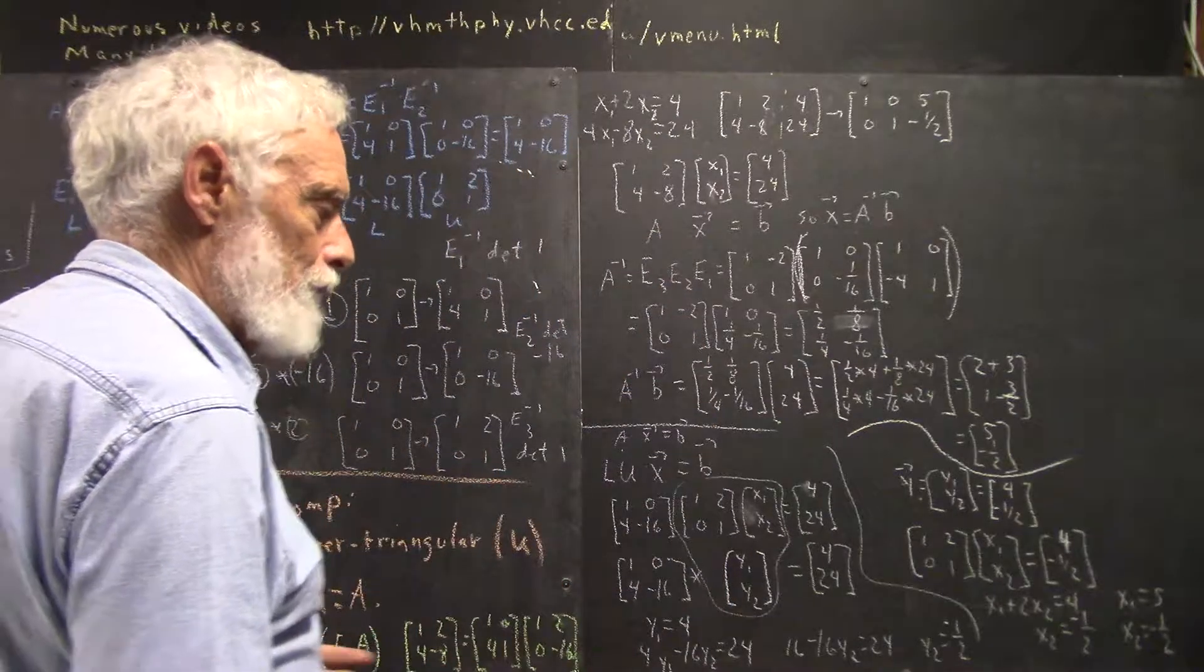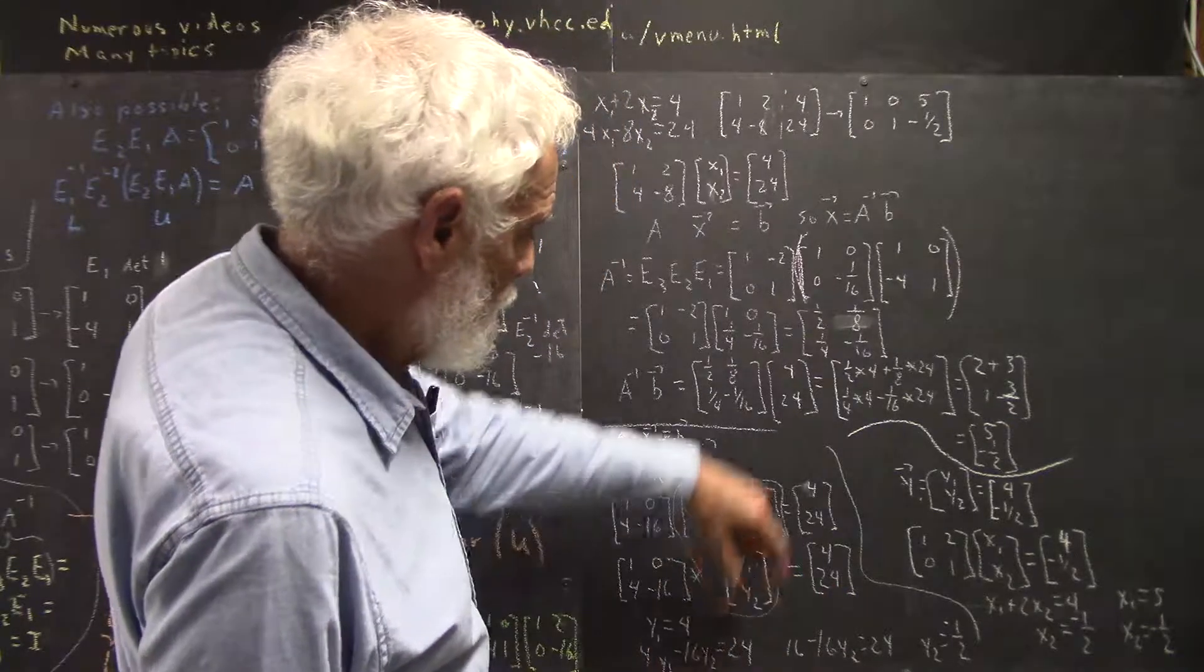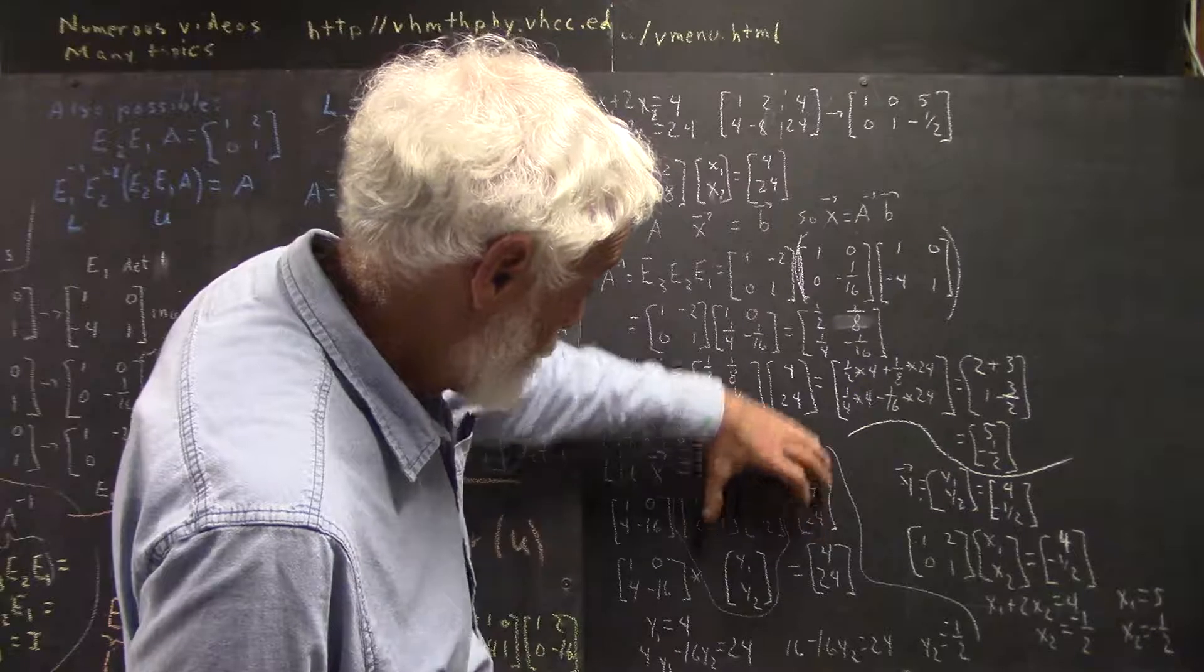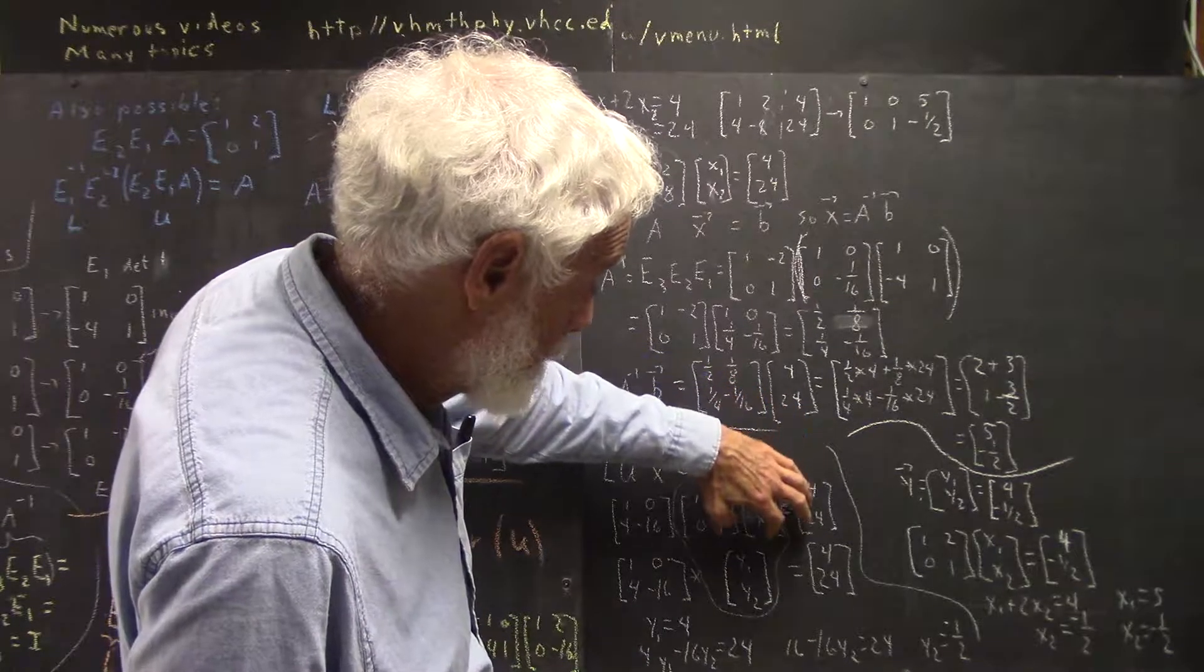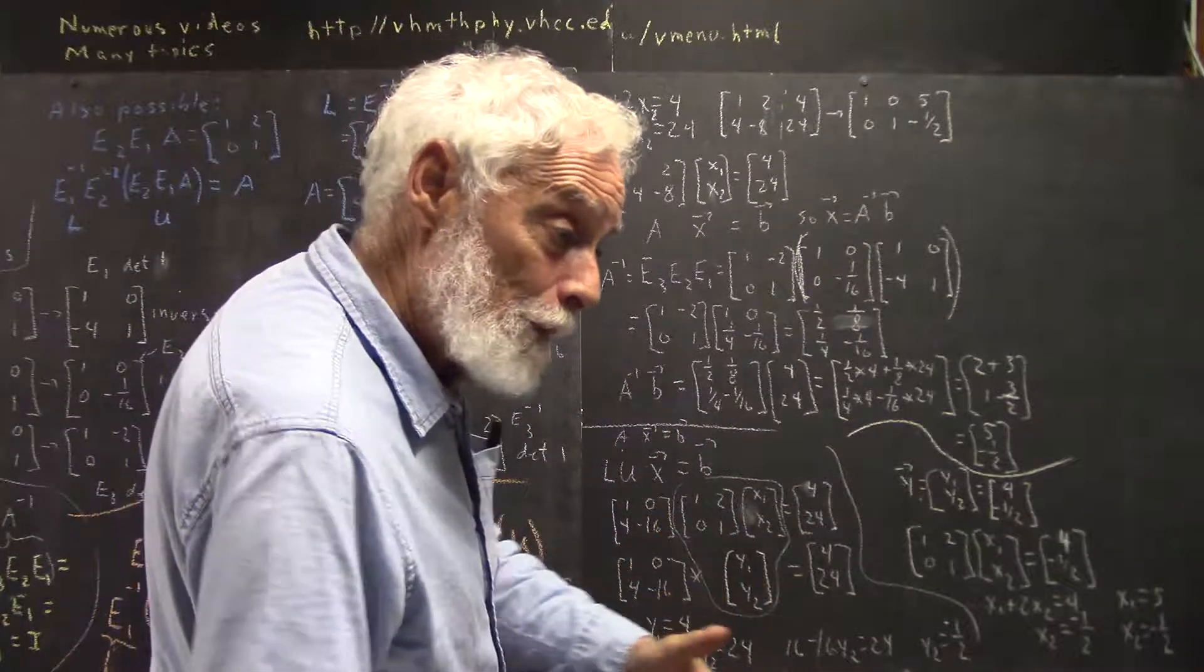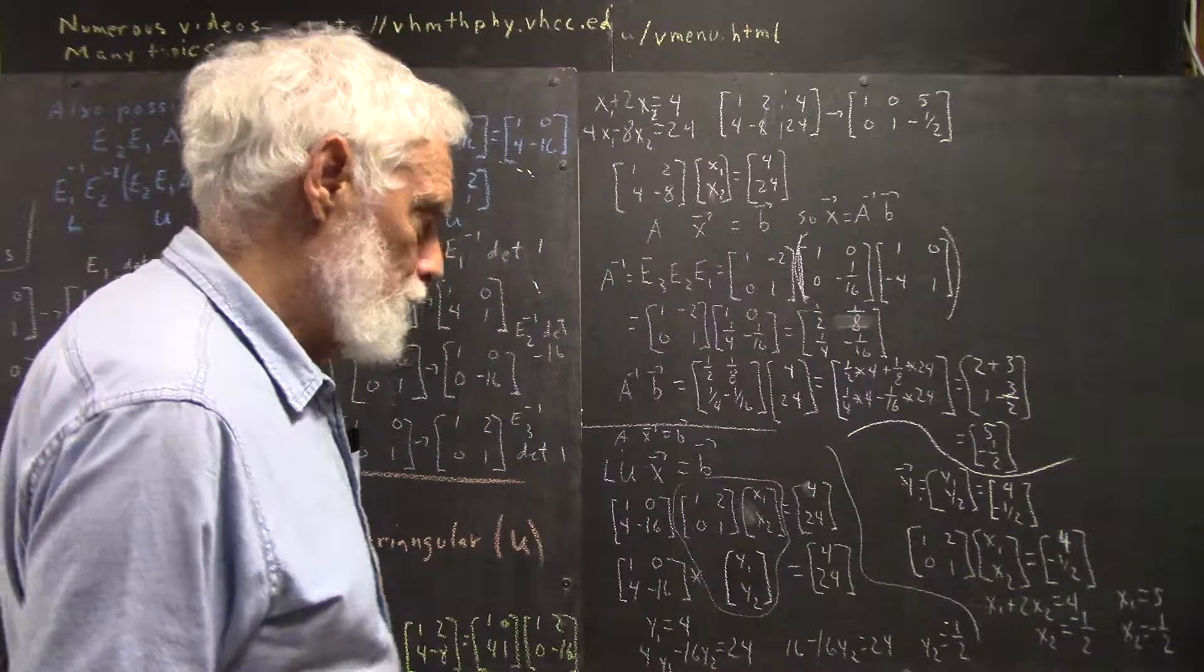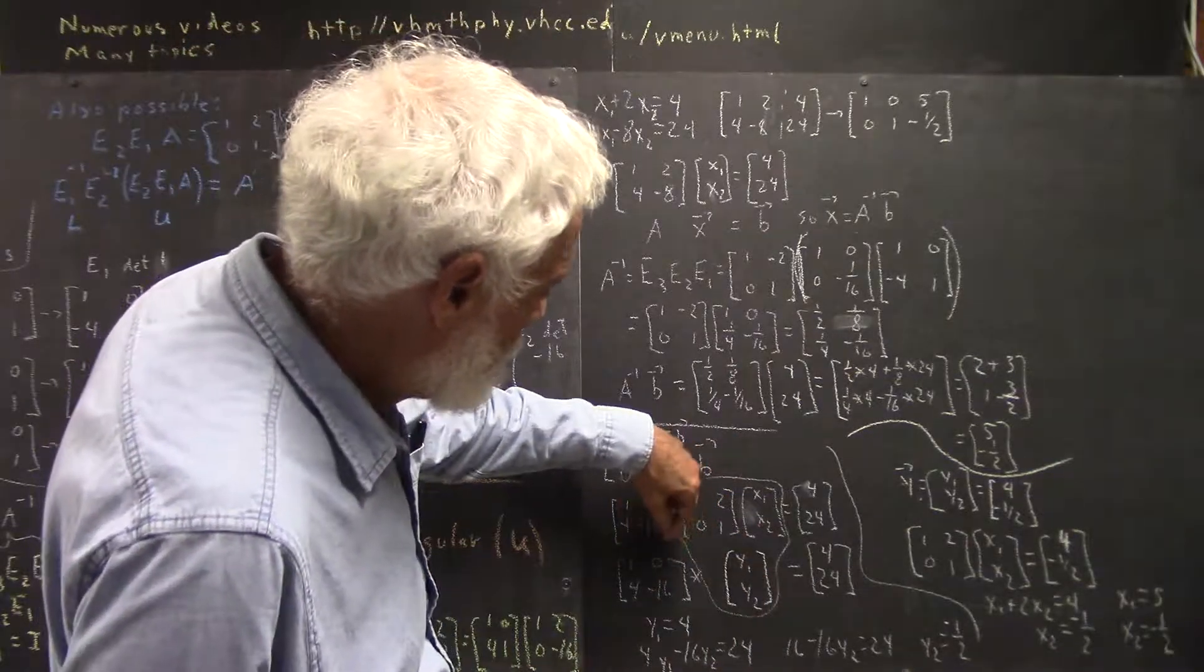Now, I don't have to call it Y. I could call it W, Aardvark, anything. It's a dummy variable. We insert it here to get a solution to this equation, and then we're going to set whatever we get. We're going to get our solution here, set that equal to this, and then we'll get our solution for X1, X2. We don't give a hoot about Y1, Y2, but we need to go through the step of finding the Y1, Y2 so we can find the X1, X2.